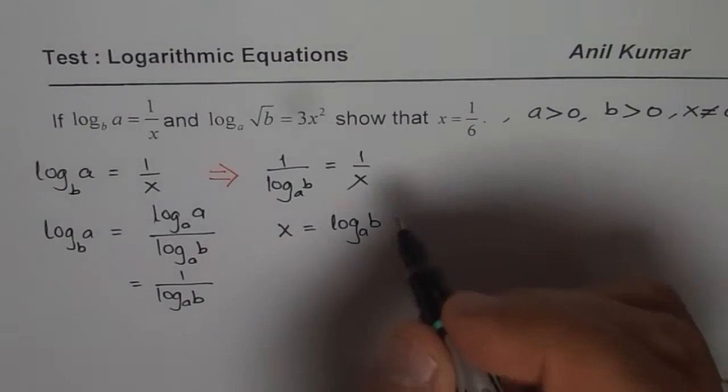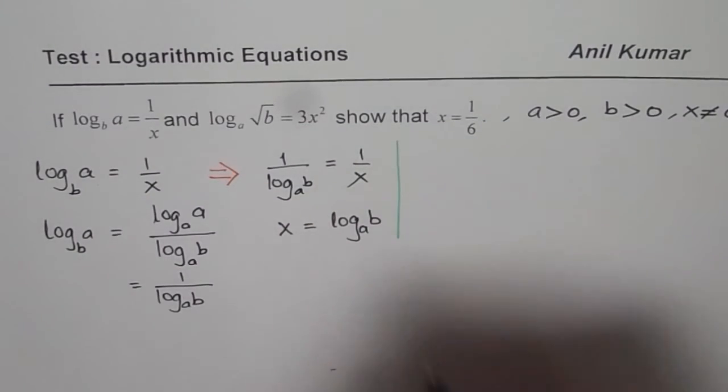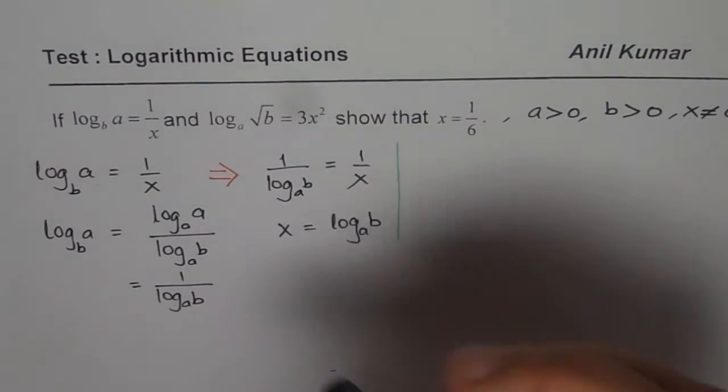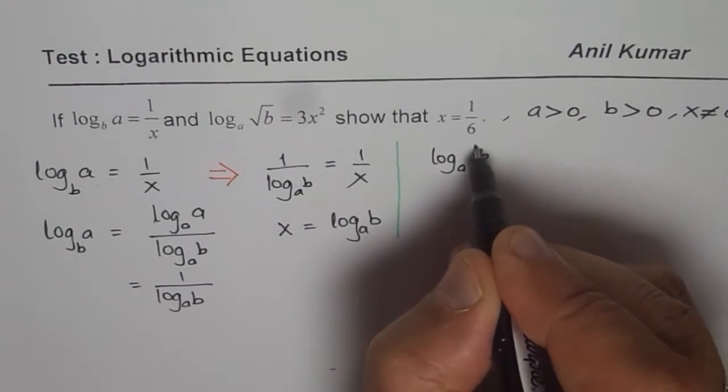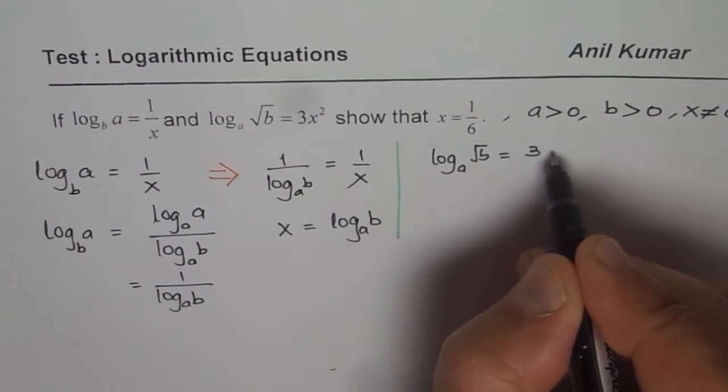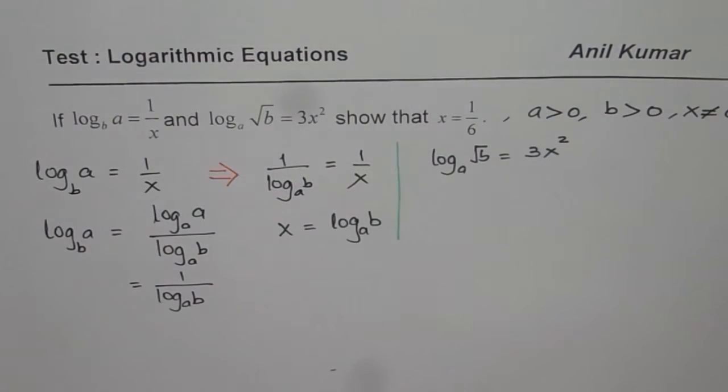Now let us analyze the second equation. The second equation for us is log a of square root b equals 3x square.